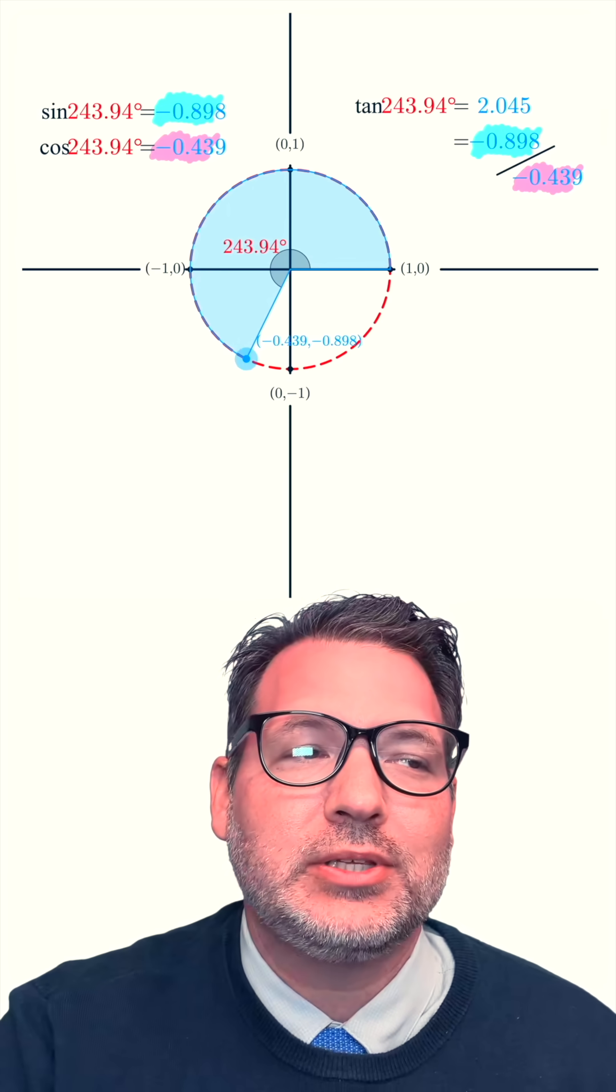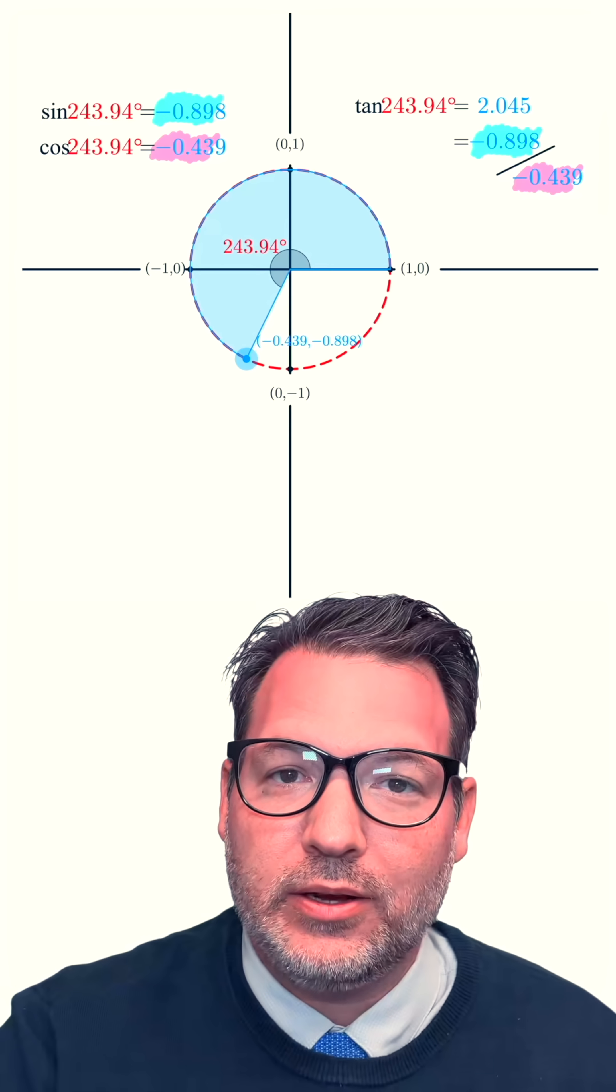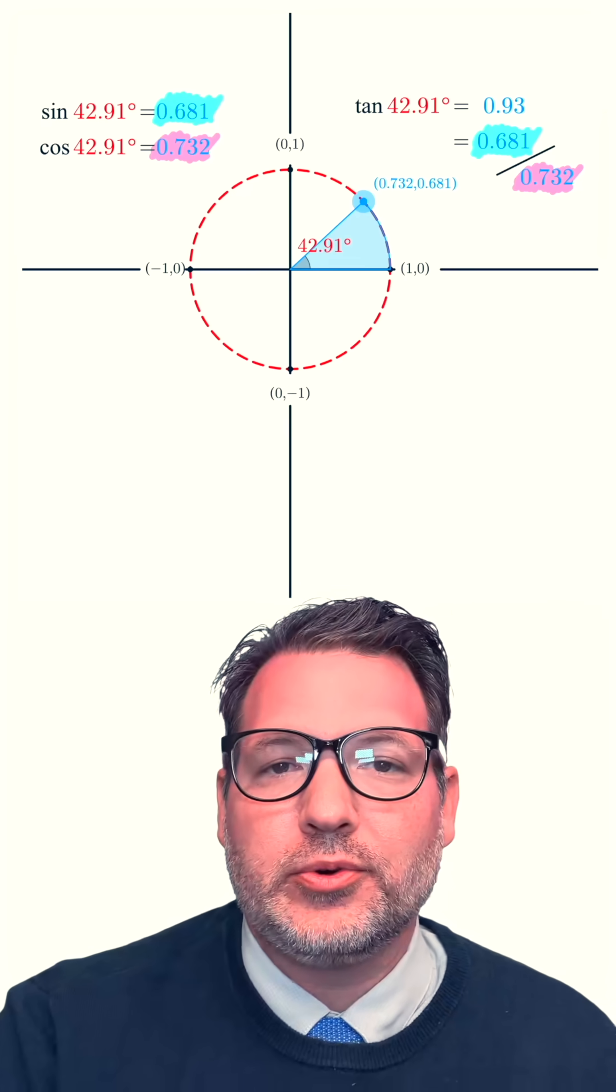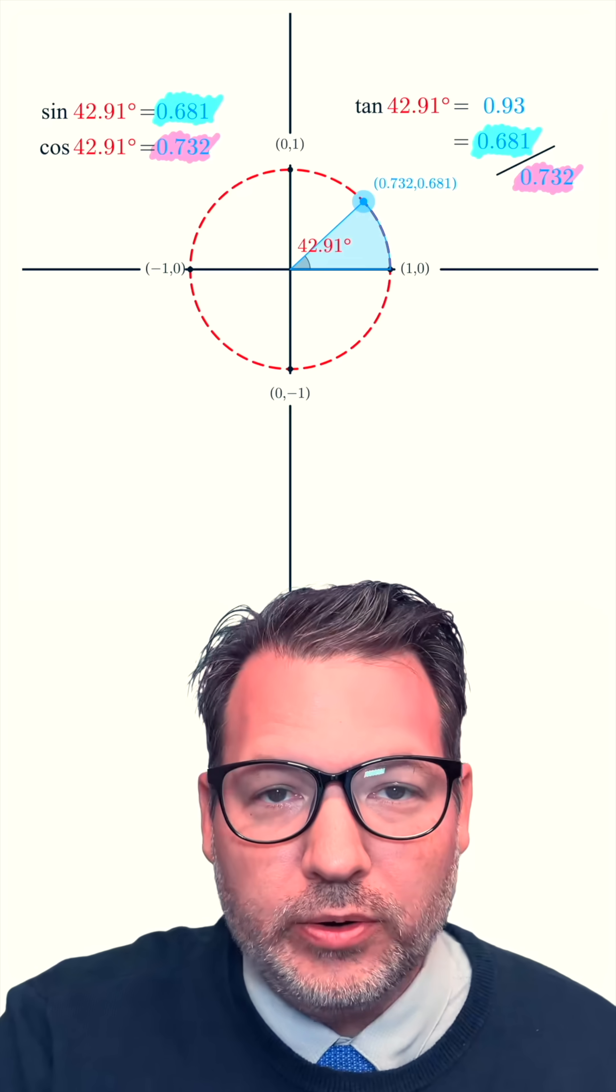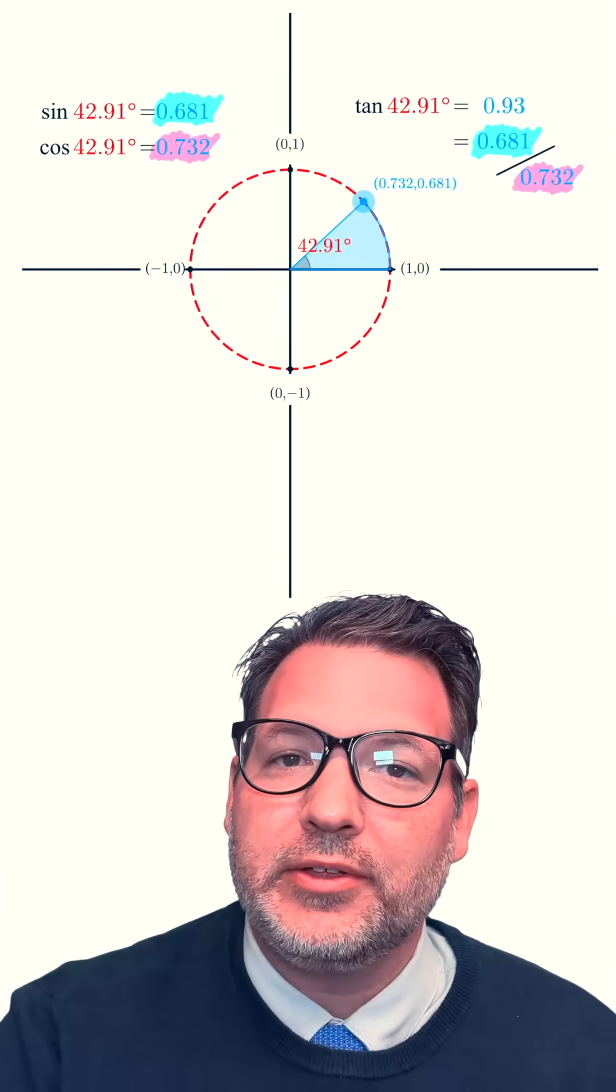This also means that tangent is actually giving us the slope of the particular line passing through that angle. When we're looking at angle values here in quadrant one, the line that passes through the center of the coordinate plane, the origin, and the edge of the circle has a positive slope. And so tangent values for all the angles in quadrant one are positive.